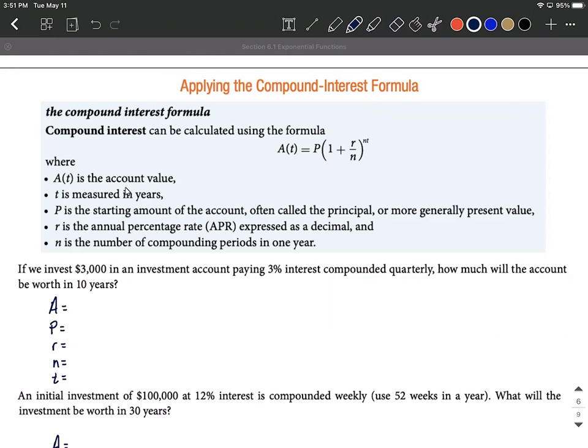A of t is the accumulated amount or the account value. t is the time measured in years. P is whatever we start with, sometimes referred to as the principal when we're talking banking problems or maybe present value in some applications.